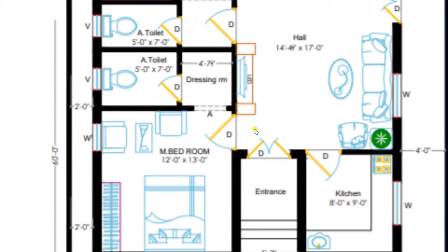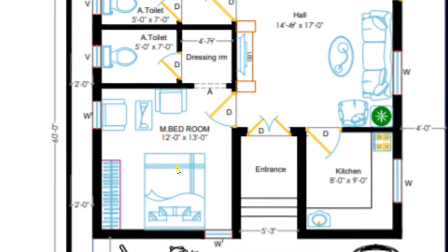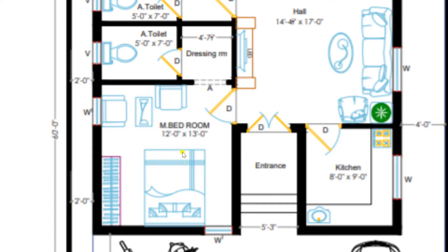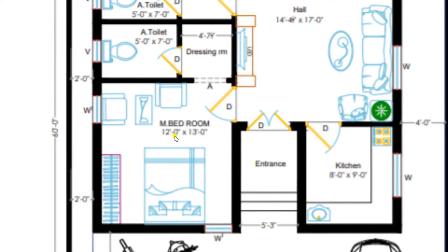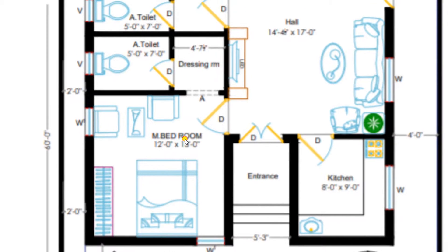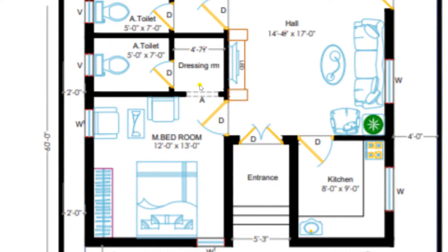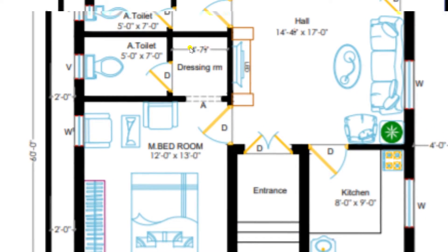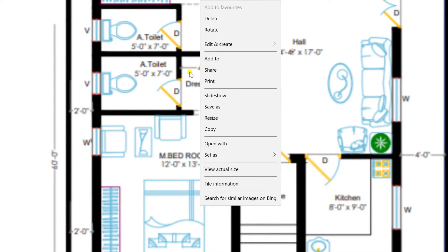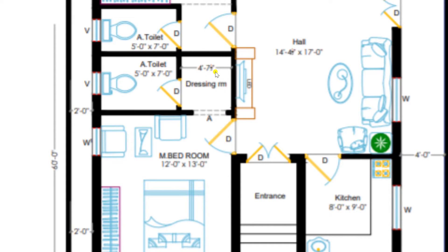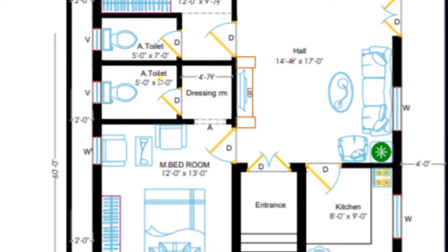Now I am entering through the hall to the master bedroom of our plan. This is a very standard dimension of size 12 feet by 13 feet. Here we have plotted a bed along with wardrobe and also chairs along with a TV. This master bedroom is attached with a toilet and also a dressing room. The dressing room is having a dimension of 4 feet 7.5 inches and a toilet of size 5 feet by 7 feet.